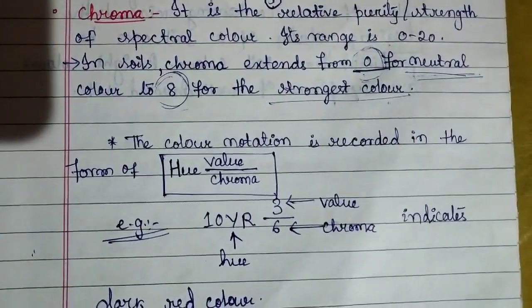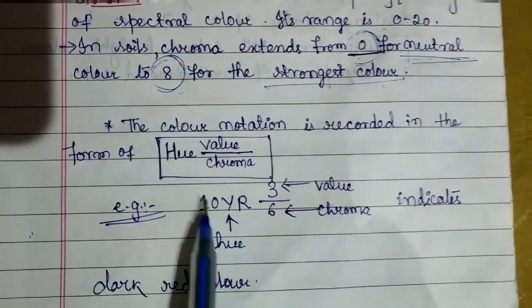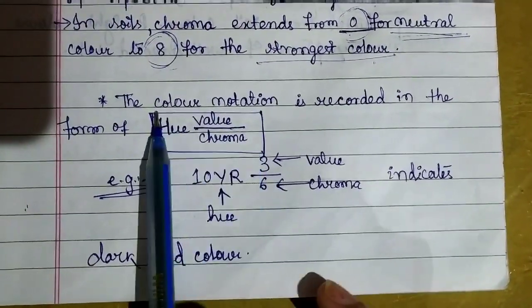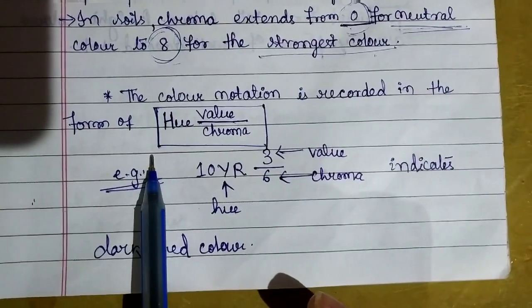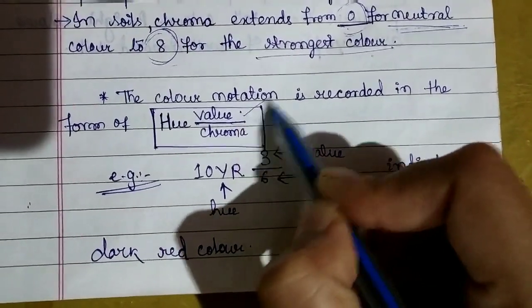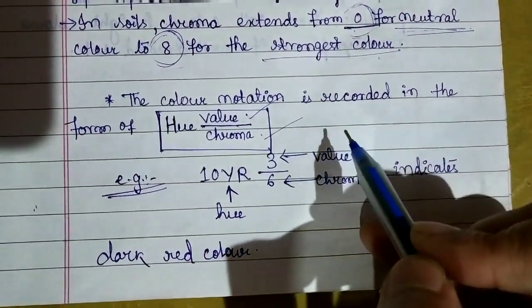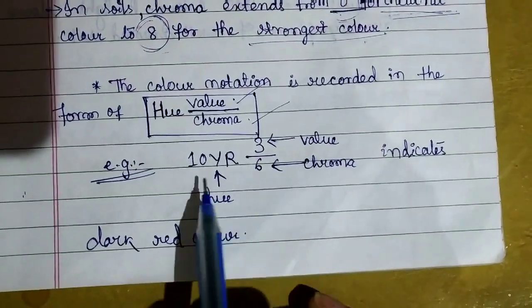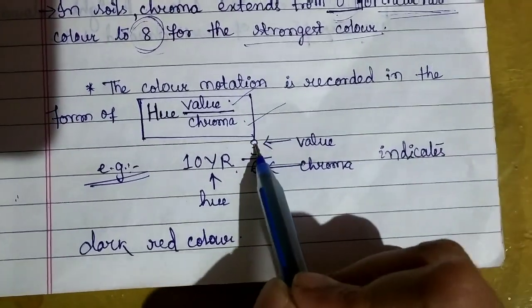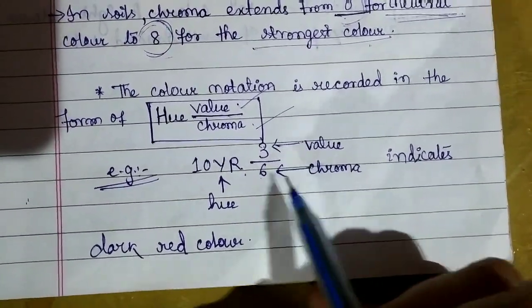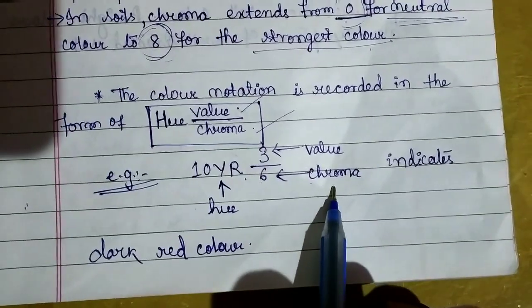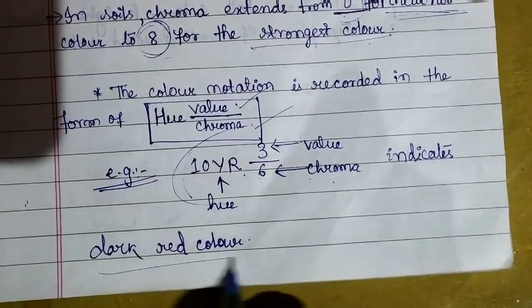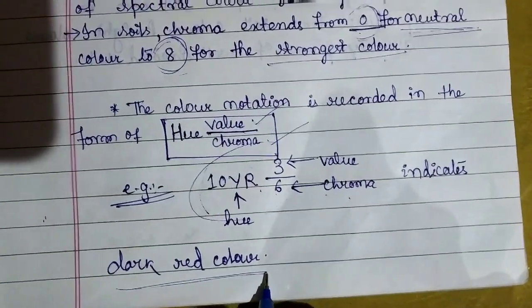Here I have shown an example. When we give scientifically hue, value, chroma notation, we write it this way: value is in numerator and chroma is in denominator. For example, 10YR is the hue, 3 is the value, and 6 is the chroma. Together they indicate dark red color.